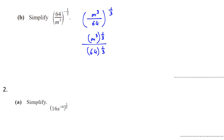This power applies to both m and 64. If the powers are inside the bracket and outside, we multiply them. So 3 multiplied by 1 over 3 gives us 1, so m to the power of 1, which we write as m. And 64 to the power of 1 third — put it in the calculator and you get 4. So the answer is m over 4.